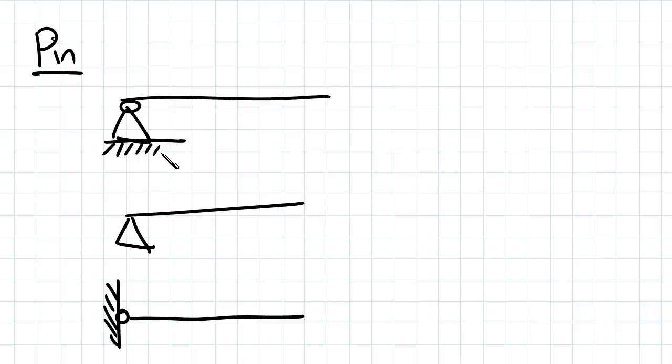Now what does that mean in terms of reactions? Well in terms of reactions, if I draw a point here and I consider the reactions that our pin support is restraining, we're going to have a reaction vertically and a reaction horizontally.